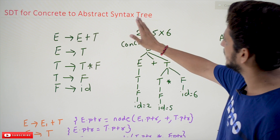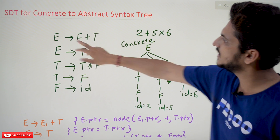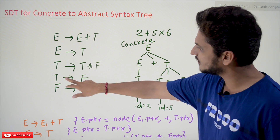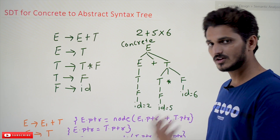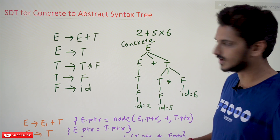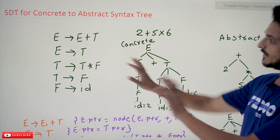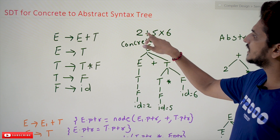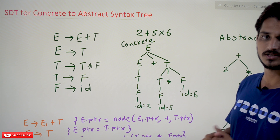In today's class we will understand syntax directed translation for concrete to abstract syntax tree. The grammar we are using is: E → E + T, E → T, T → T * F, T → F, F → id. This is the regular grammar we have been using for the previous 10 to 15 videos, so we are not explaining it again. This grammar identifies expressions. Assume the example expression is 2 + 5 * 6.